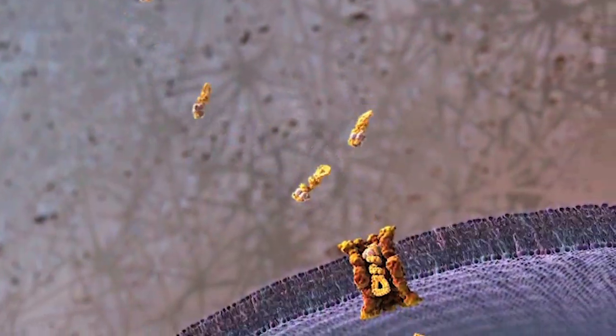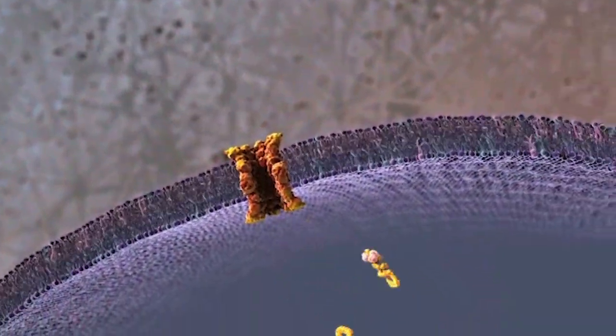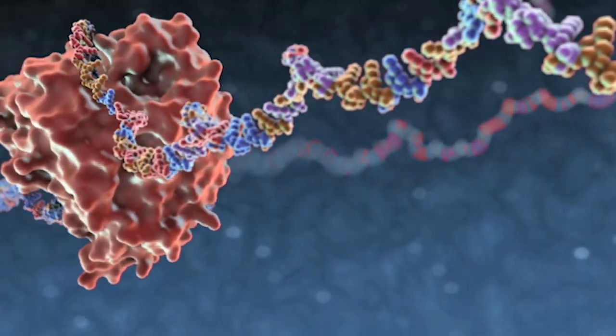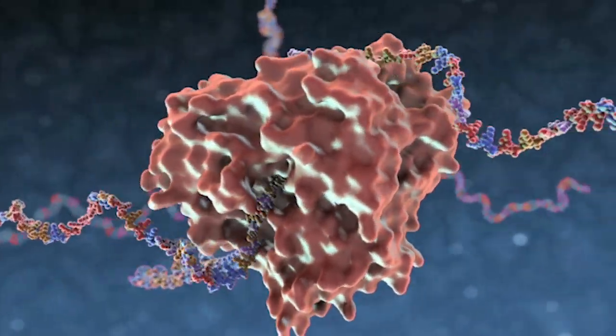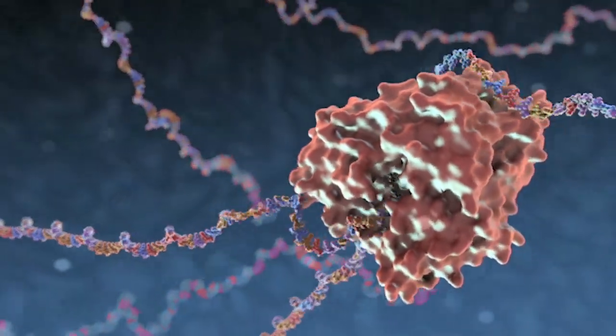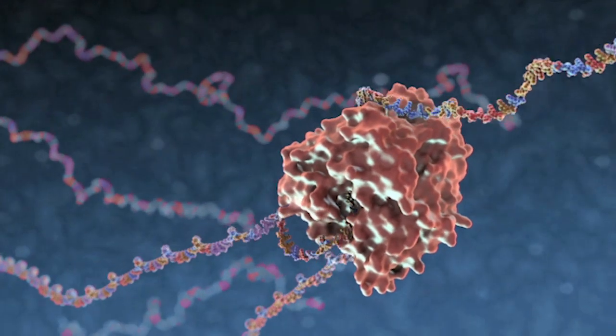At the nuclear membrane, the viral core uses host protein channels to enter. Inside the nucleus, cell machinery is utilized by the virus to replicate the viral genome and make messenger RNA, mRNA.